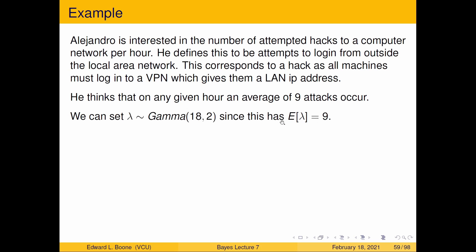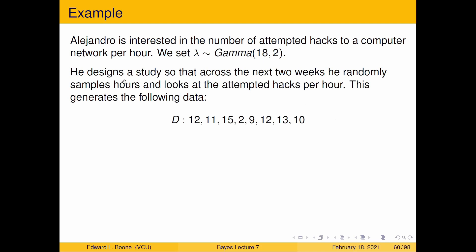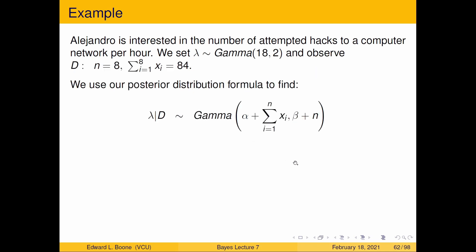He thinks on any given hour an average of nine attacks occur, so he sets Gamma(18, 2) as the prior for lambda, since that distribution has an expected value of nine — alpha divided by beta equals the mean. Across the next two weeks he randomly samples hours, generating the following data: 12, 11, 15, 2, 9, 12, 13, and 10. Summarizing: n equals 8, and the sum of the xi equals 84.